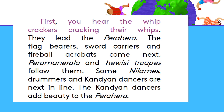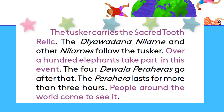Some nilames, drummers, and Kandian dancers are next in line. The Kandian dancers add beauty to the perahera. The tusker carries the sacred tooth relic. The Diyawadana Nilame and other nilames follow the tusker. Over a hundred elephants take part in this event. The four devala peraheras go after that. The perahera lasts for more than three hours.